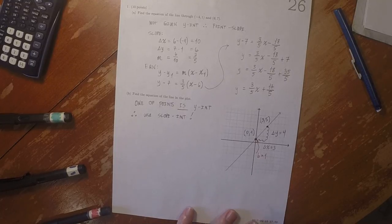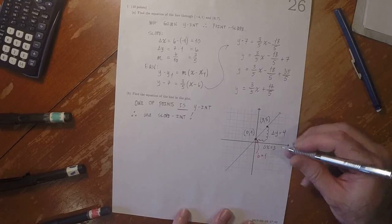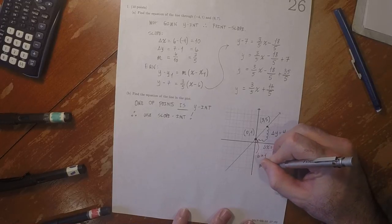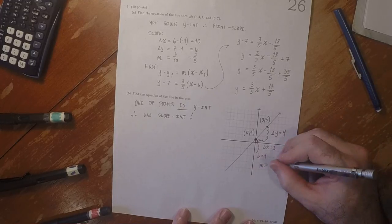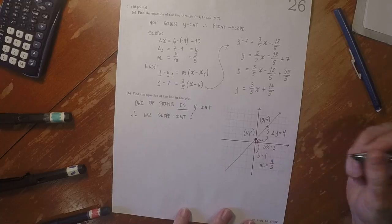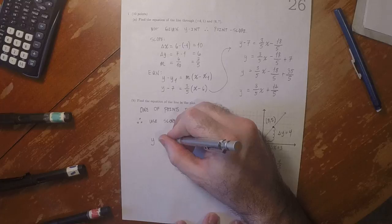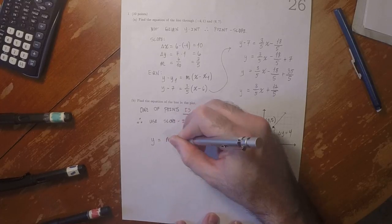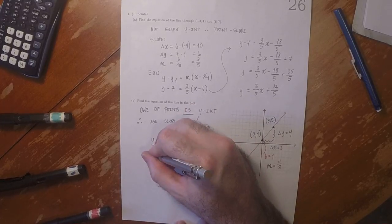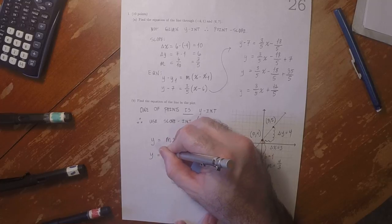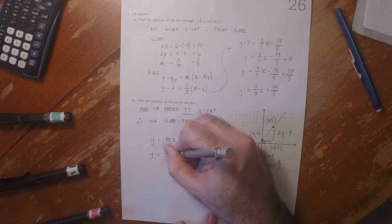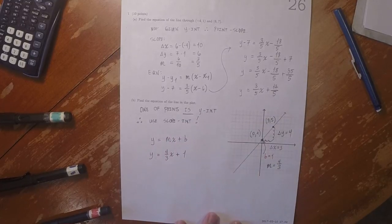Those together tell us that the slope m is 4 over 3. Therefore we just use y equals mx plus b, so y is 4 thirds x plus 1.